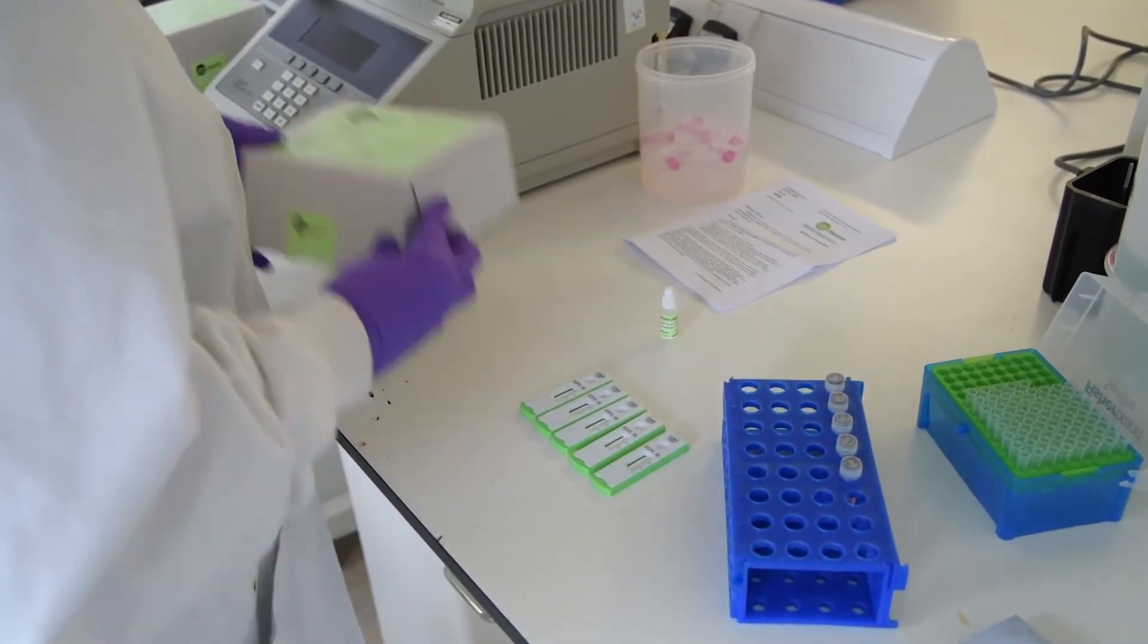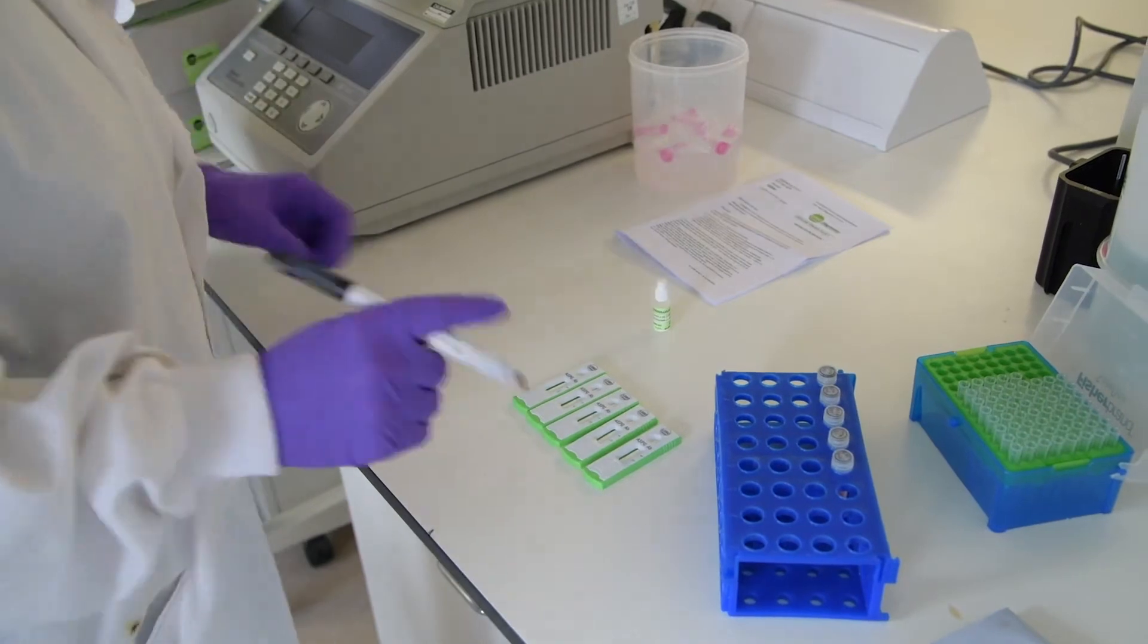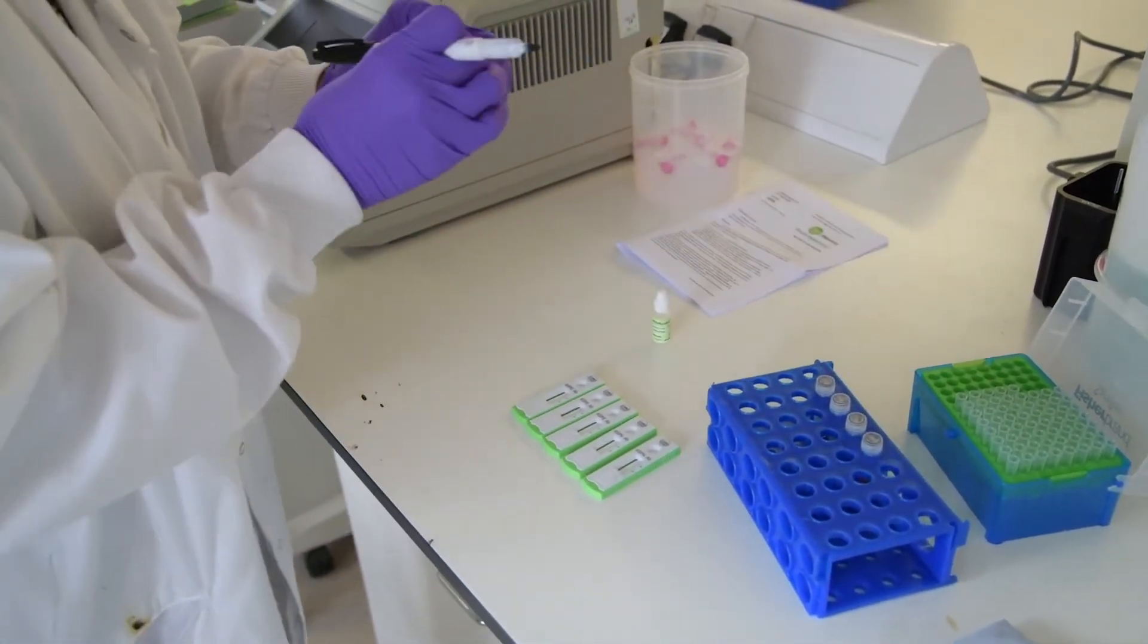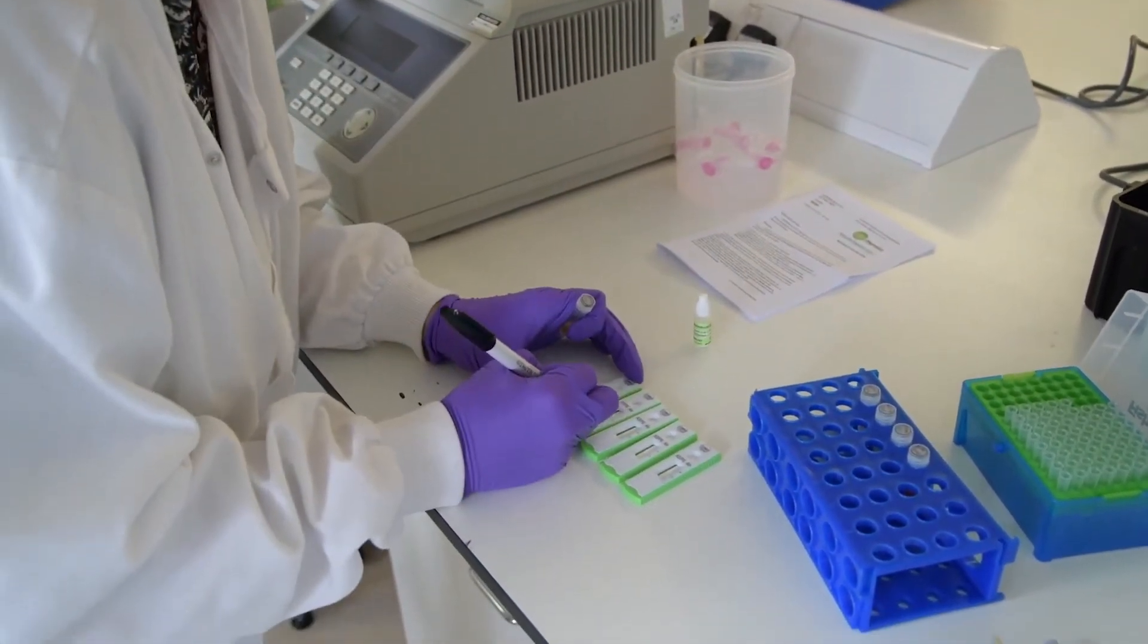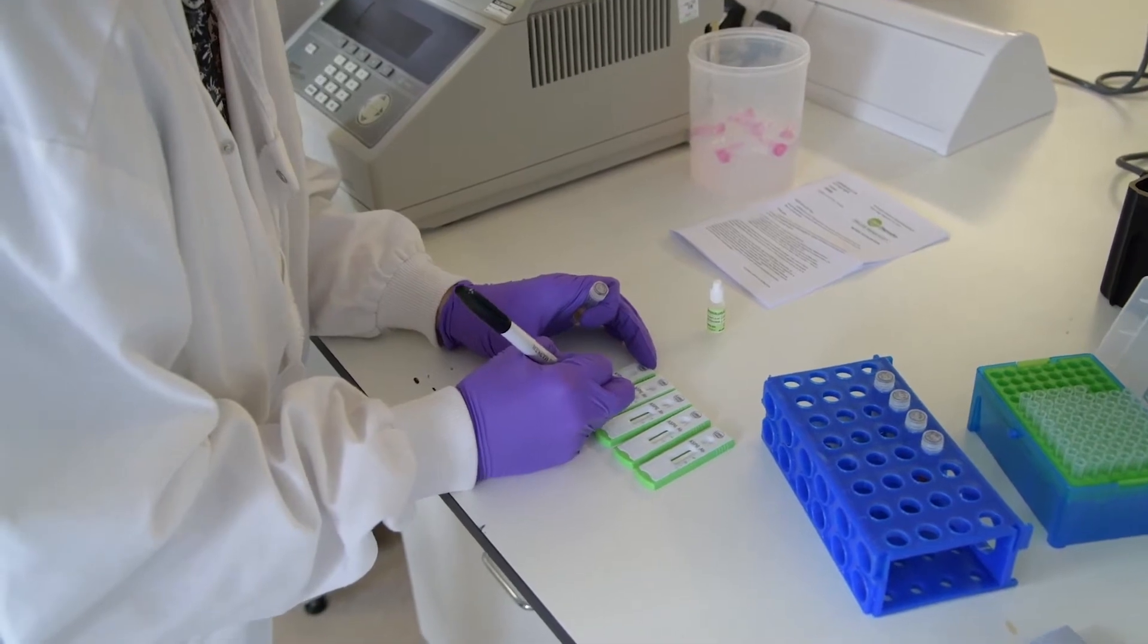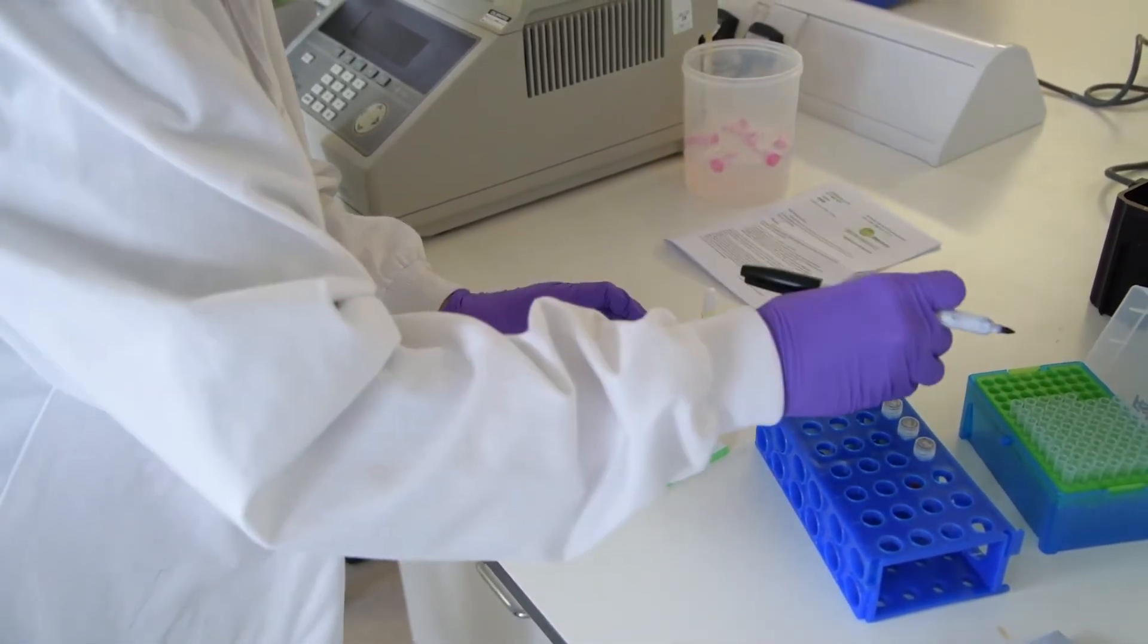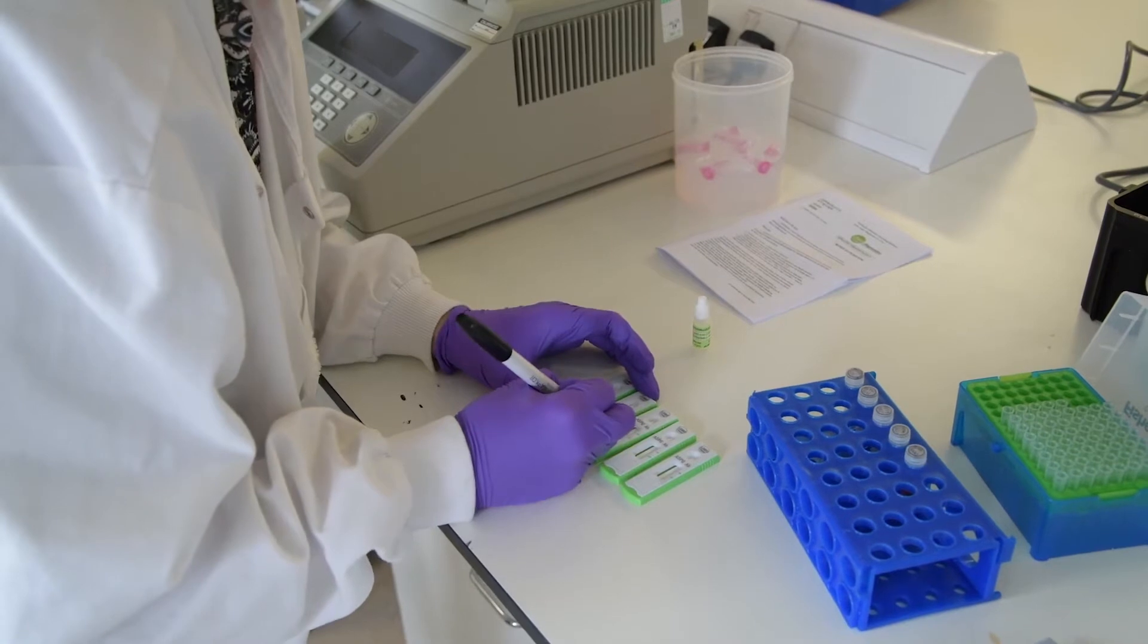At this point, remove your serum or plasma samples from the fridge or freezer. Label each cassette with the reference of each sample to be tested. Do not use cassettes with different lot numbers and do not work with runs of more than 10 cassettes.